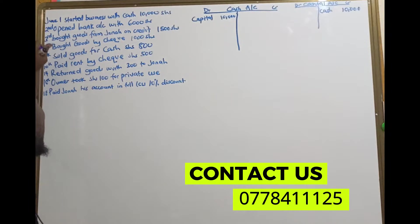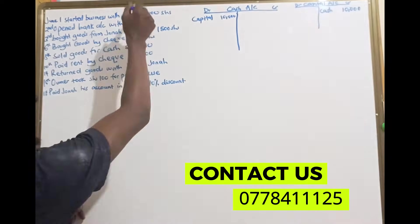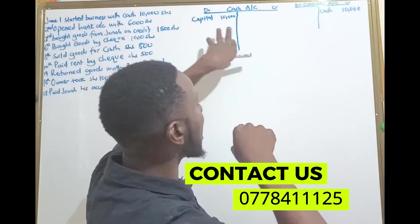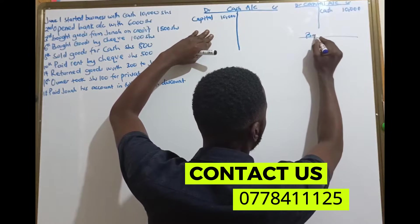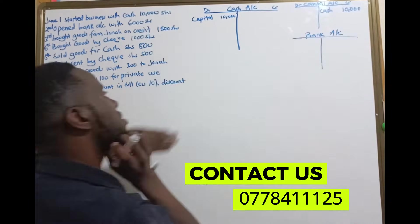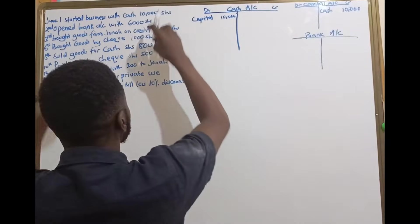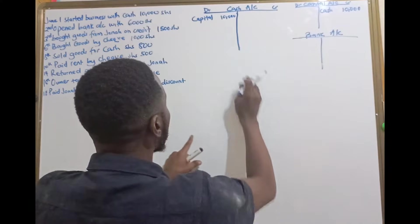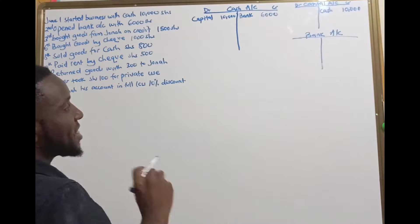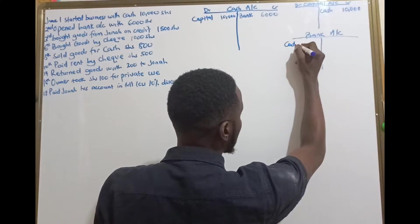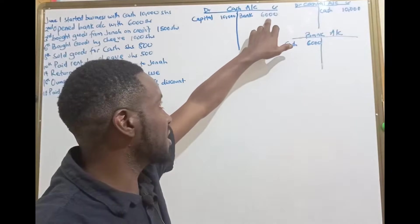The next transaction says on the 2nd of June they opened up a bank account with 6,000 shillings. One account is the bank account and the other is the cash account. The 6,000 is the cash we had received. So we are going to lose 6,000 from our cash to open up a bank account — that means our cash is losing to the bank an amount worth 6,000. Our bank is going to receive cash worth 6,000.